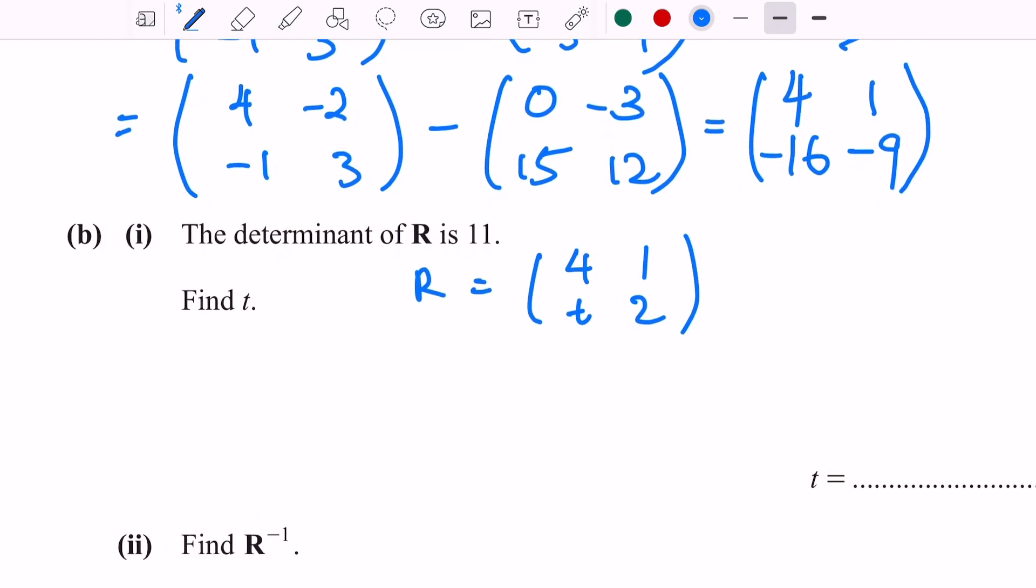The formula for determinant for any 2×2 matrix would be ad - bc. What does this alphabet mean? It means the position of a matrix: a will be here, b here, c, and lastly d.